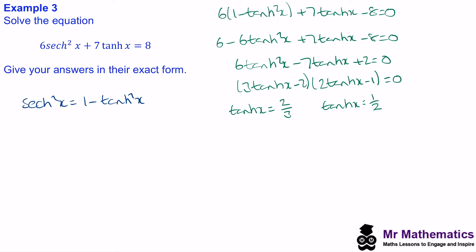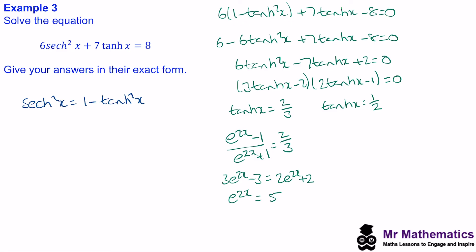To solve each of these, we write tanh of x in exponential form: e to the 2x minus 1, over e to the 2x plus 1, equals 2 thirds. Moving terms across, 3e to the 2x minus 3 equals 2e to the 2x plus 2, so e to the 2x equals 5. Taking the square root of both sides, e to the x equals root 5, and so x equals the natural log of root 5.